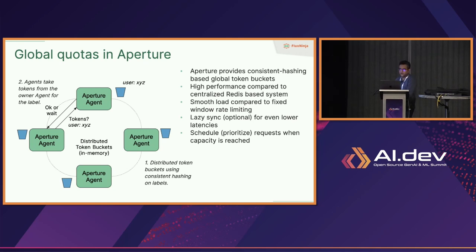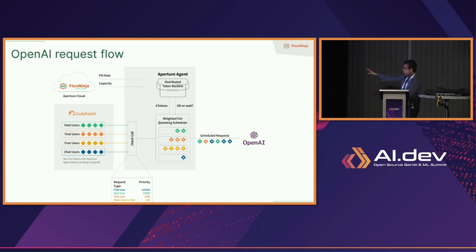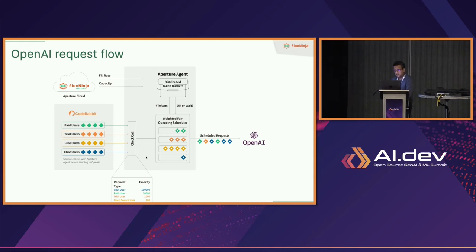Once you have this token bucket constraint applied, it also provides a weighted fair queuing scheduler where requests are actually prioritized. Here's how we worked with CodeRabbit: they have different workloads from different user tiers — paid, trial, free, interactive chat. Before making a call to OpenAI, they check the call against Aperture, which does client-side rate limiting, tracking and mimicking OpenAI limits on the client side. If they're over the limit, requests are queued in a weighted fair queuing scheduler, giving paid or chat users higher priority than free users.